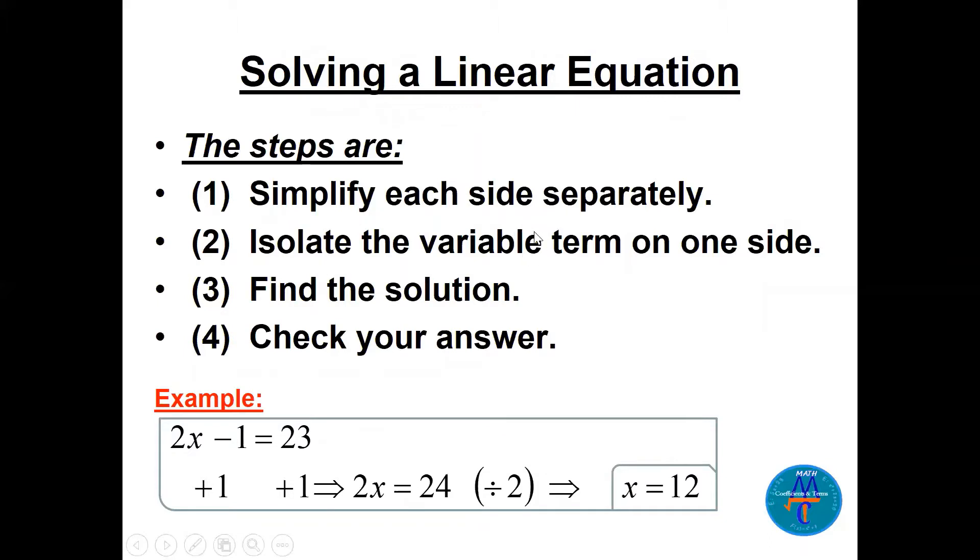Now solving a linear equation is very simple. There are three or four steps. I put an example here: 2x minus 1 equals 23. Just add one on each side, simplify each side separately, isolate the variable term on one side. Add one here, add one there, it will be 2x equals 24. Divide by 2, you get x equals 12. You can check always to make sure the number satisfies the equation, which is okay.